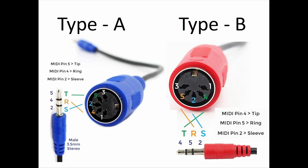Unfortunately there are two types of MIDI TRS cables out there: Type A and Type B. The difference is that pins on the DIN connector — particularly pins five and four — connect to different locations on the tip ring sleeve connector. Pin two on the DIN on both Type A and Type B connects to the sleeve, but pins five and four are swapped between Type A and Type B. They are not compatible. You need to know what your piece of equipment needs before you go out and buy one of these adapter cables.